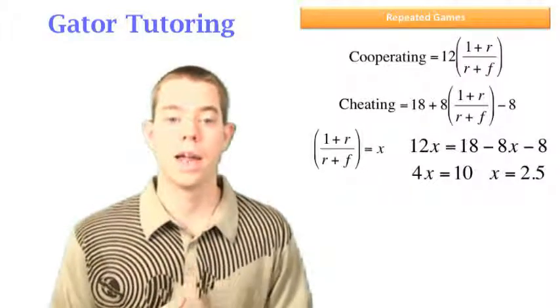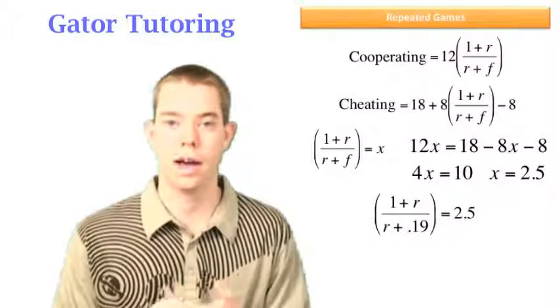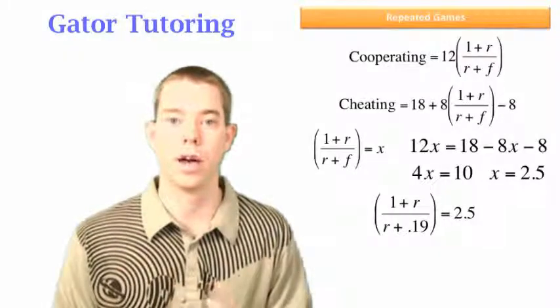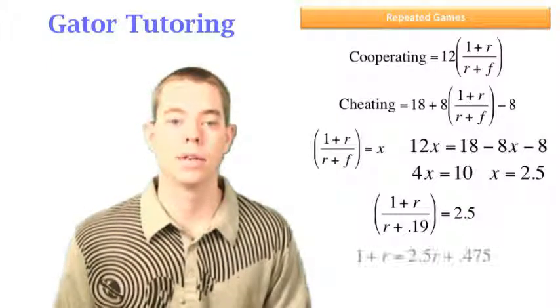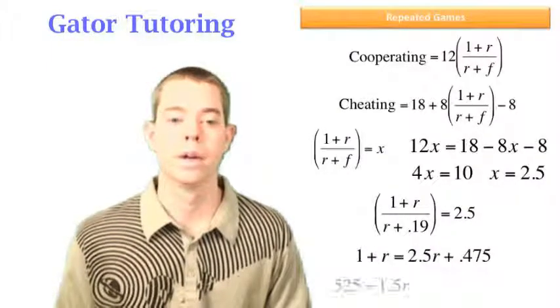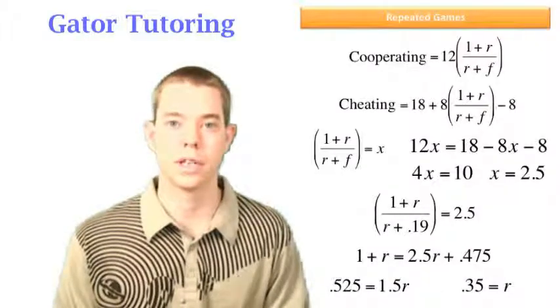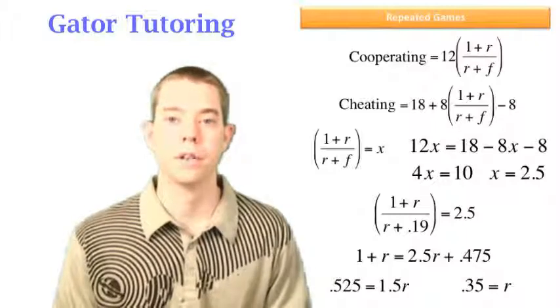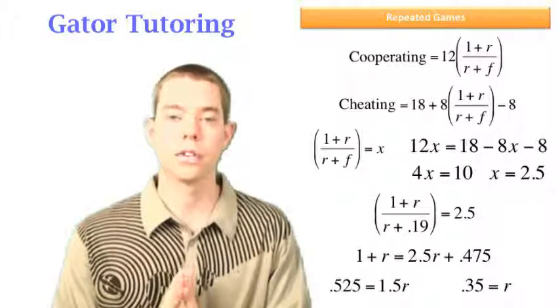I remember that x is just (1+r)/(r+f), where f I have, it's been given to me as 0.19. So I can go ahead and plug that in. Now I'm going to cross multiply and start to solve this thing. I work through the algebra and I find that the highest discount rate at which cooperation can be sustained is 0.35.